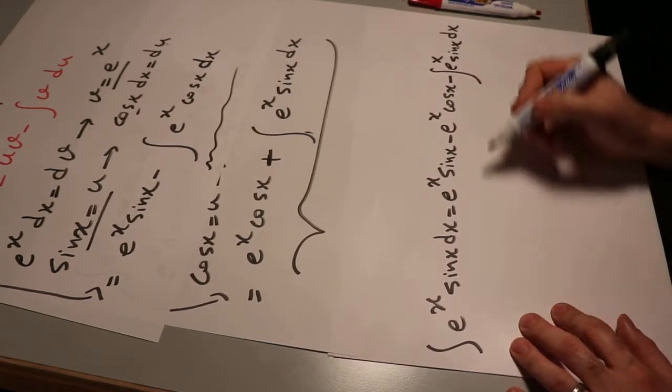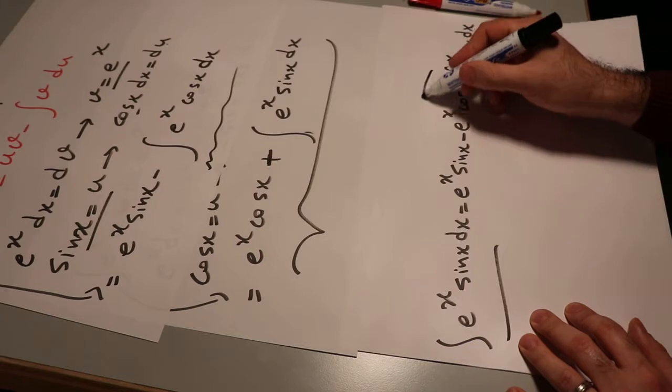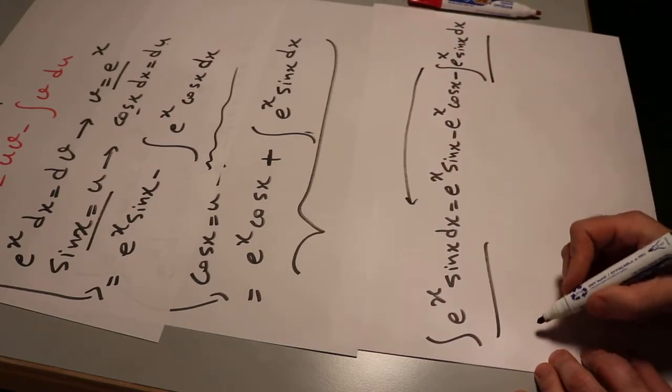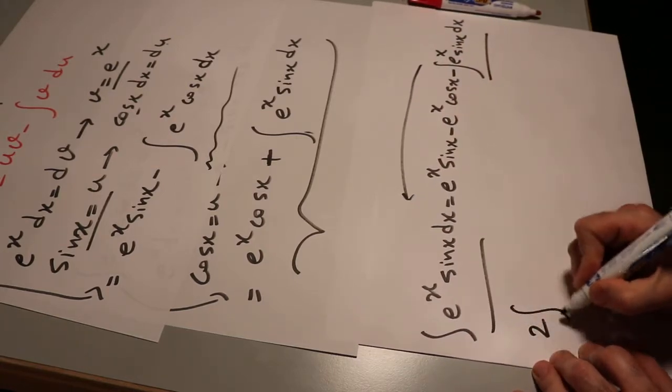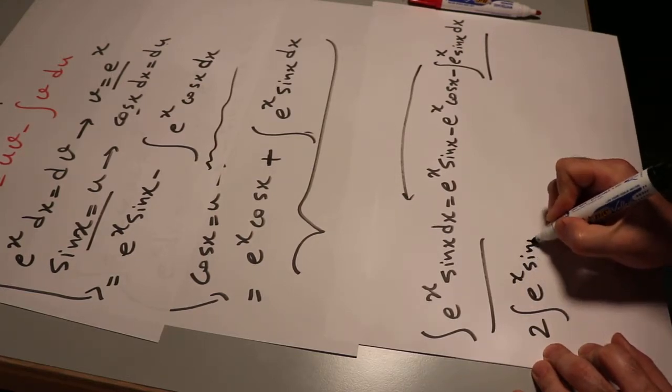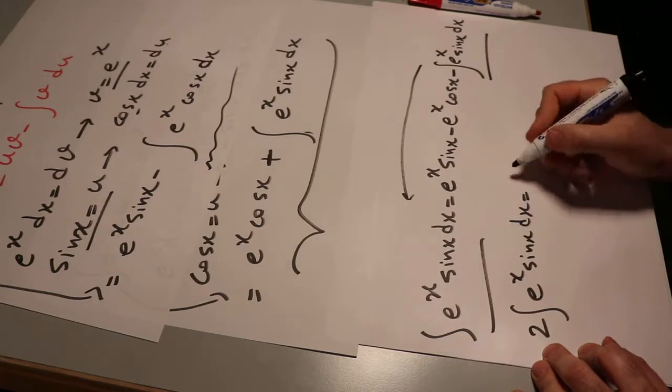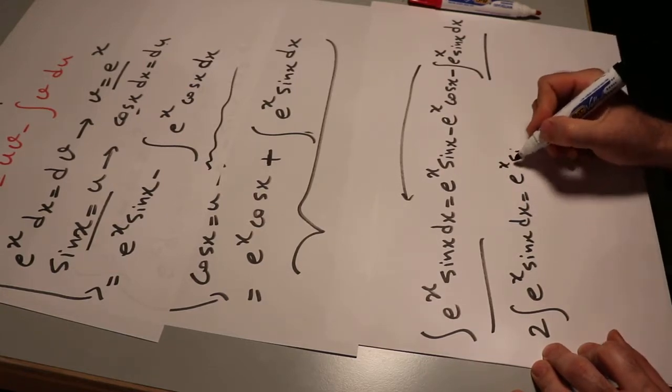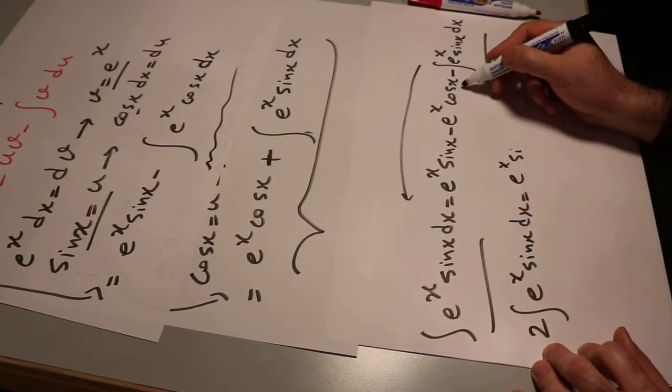Okay? So when you compare this term and this term, they are the same. So you can simply bring this one to the other side of the equation. That will be 2 integral e^x sin x dx will be equal to